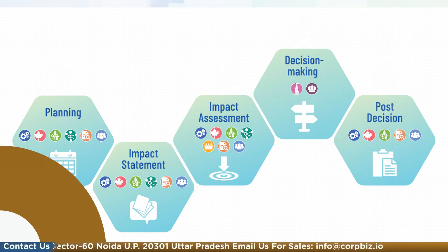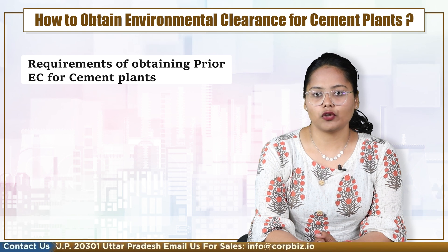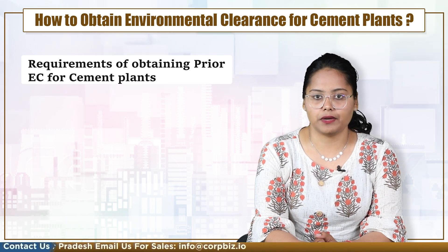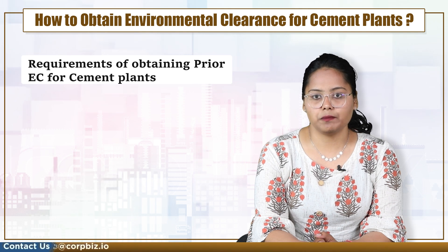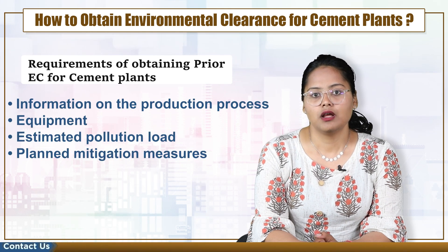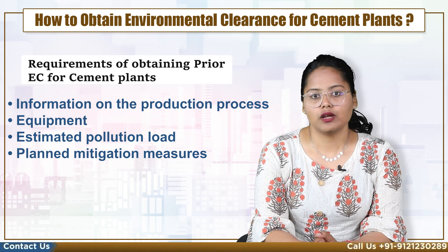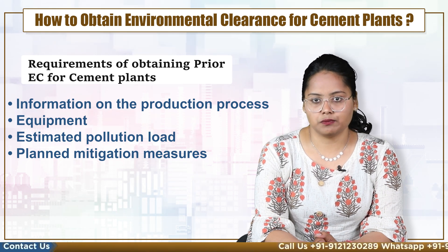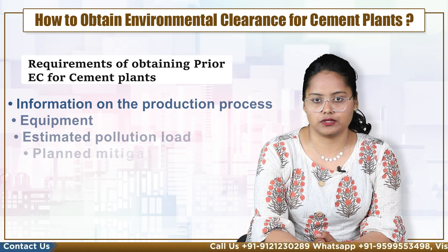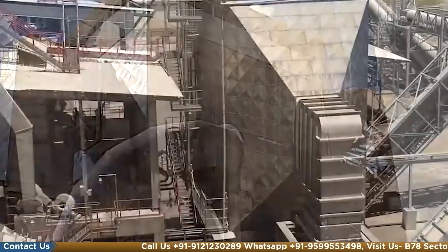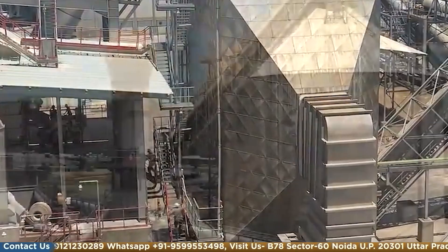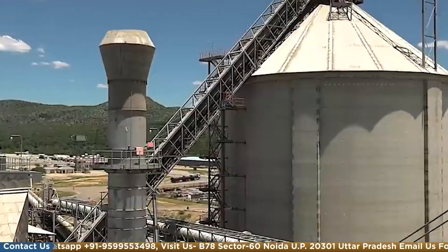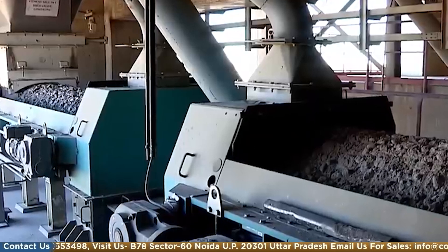Before knowing the EC process, we have to understand the requirement of obtaining prior EC for cement plants. In some industrial projects like cement plants, information on the product, process equipment, estimated pollution load, and plant mitigation measures must be ascertained during the EC process. The requirement of obtaining prior EC for cement plants is listed in Item No. 3B in Schedule 1 as per EIA Notification 2006.